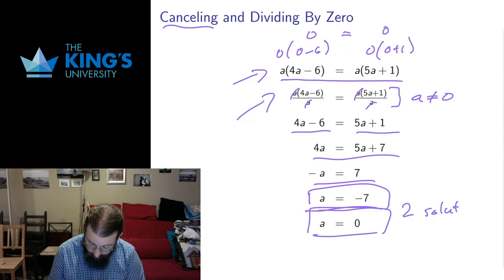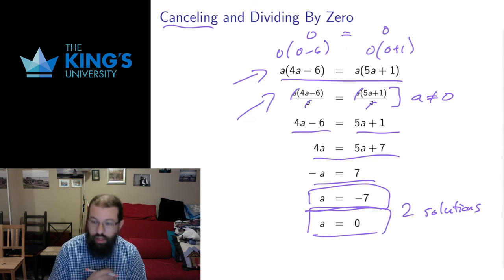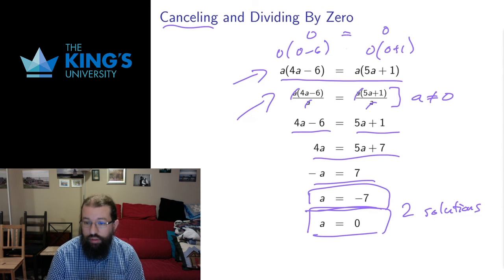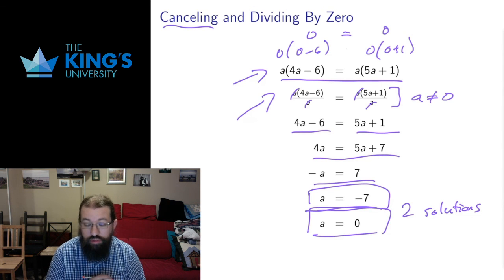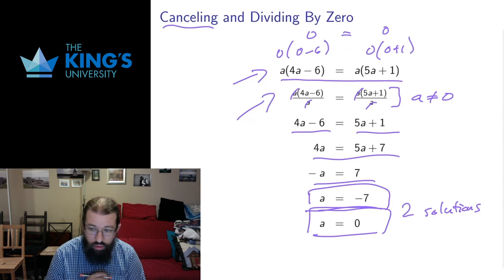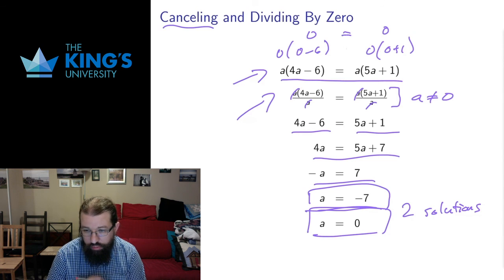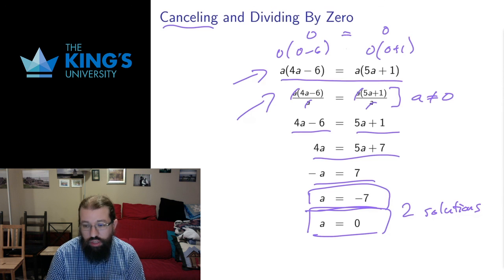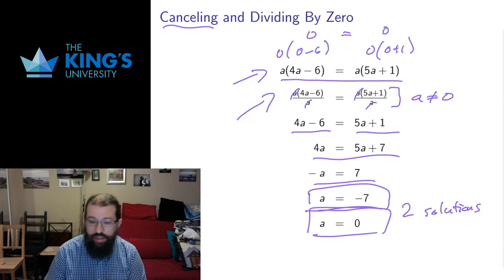So I have two solutions to this equation. If I wasn't careful about cancelling and dividing by 0, I might have missed this second solution. I might have totally forgotten that it exists. So when you're cancelling things off that involve variables, be careful for the possibility that the variable is 0, and do a special check of what happens if the variable is in fact 0.